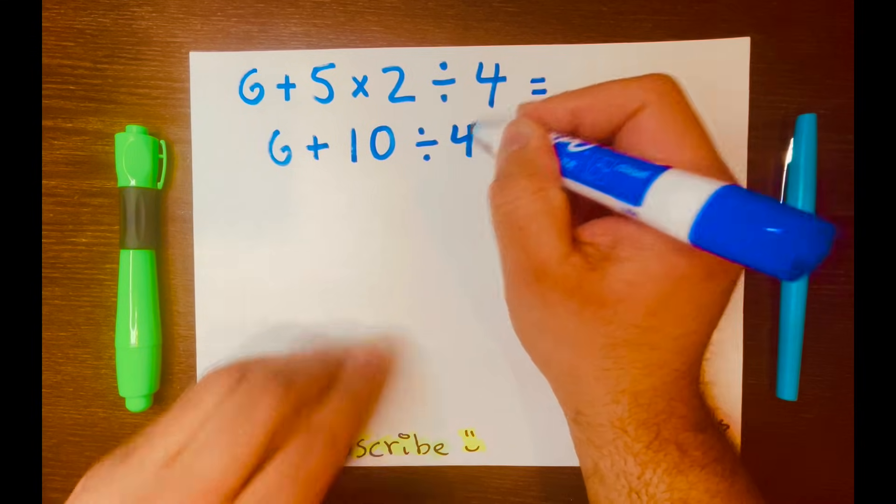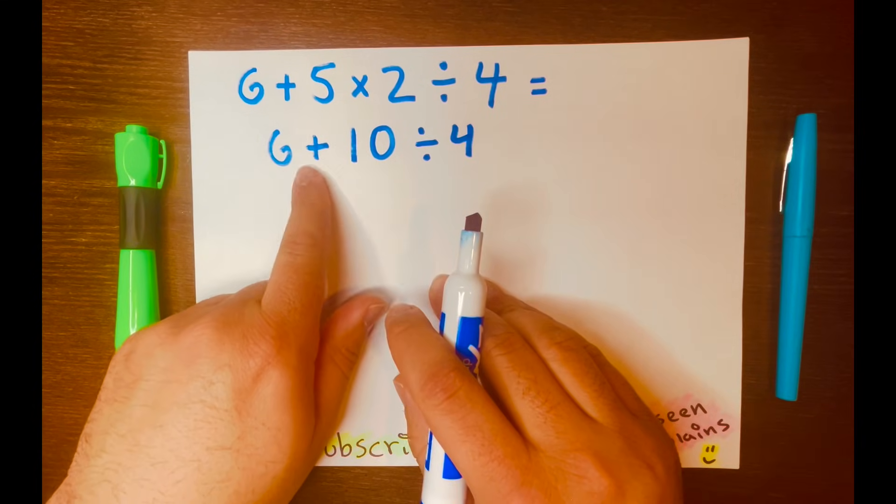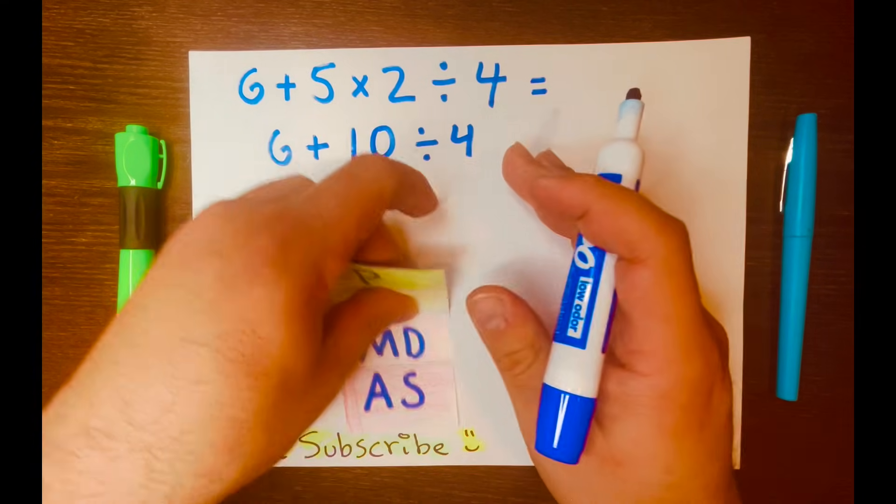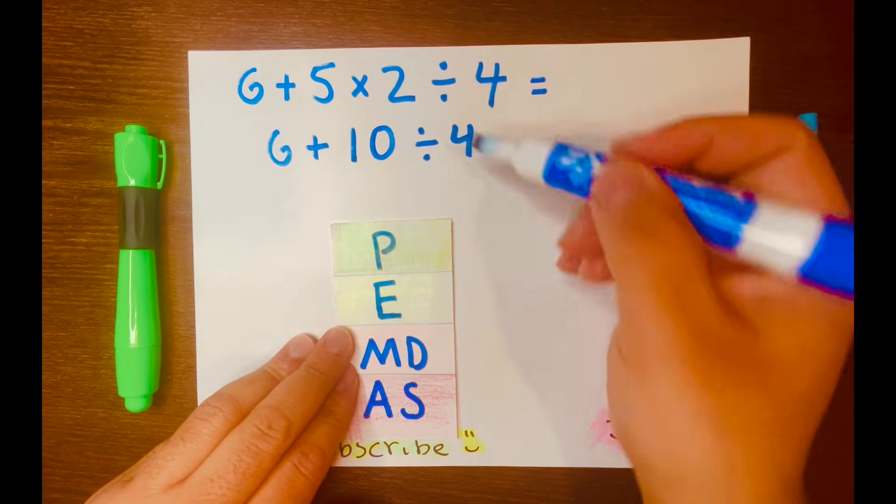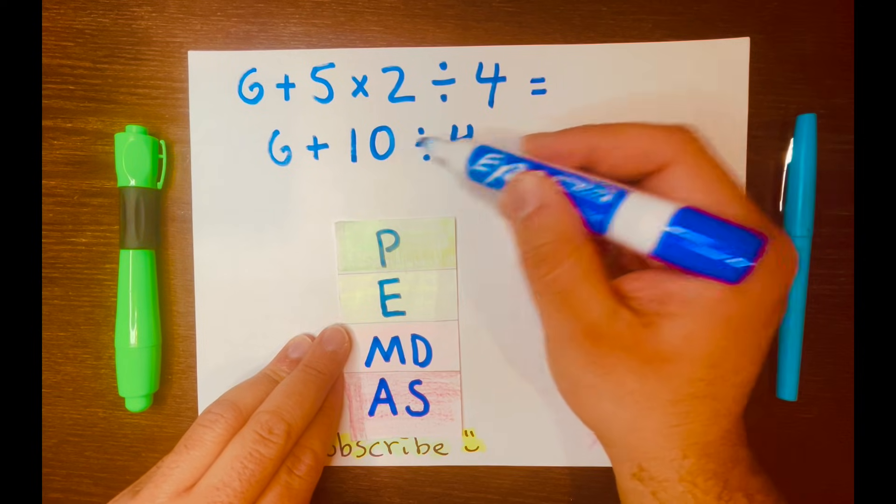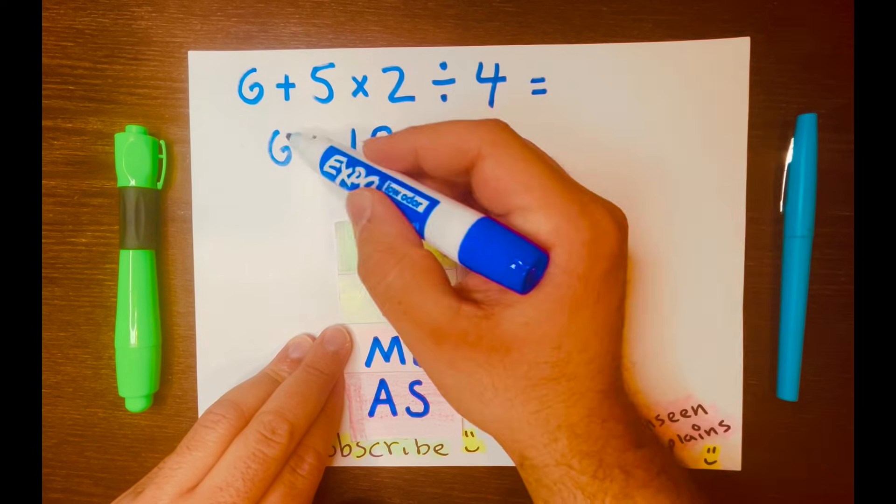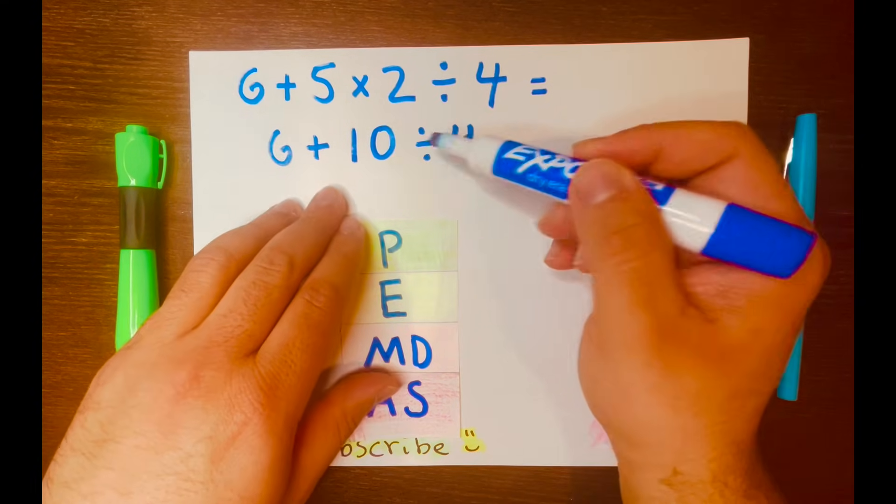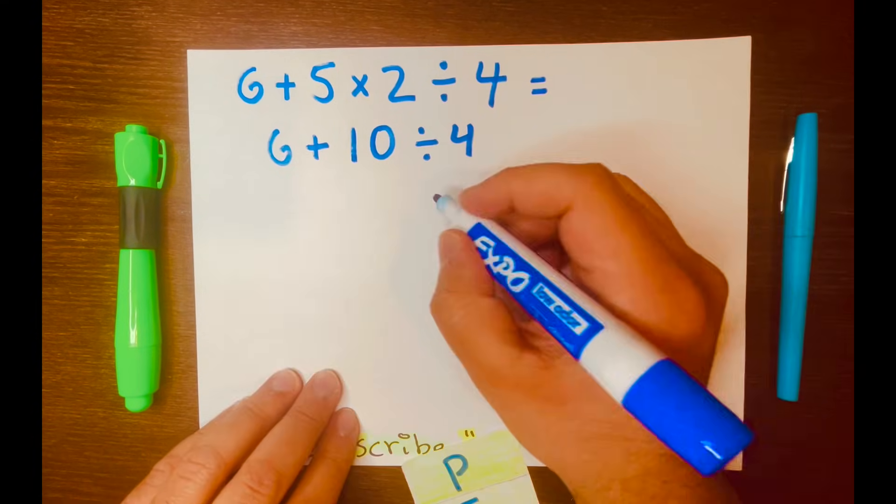Now we have 6 plus 10 divided by 4. Then looking back at PEMDAS, you are dividing first, not adding first. So you are starting with 10 divided by 4.